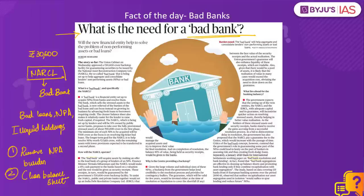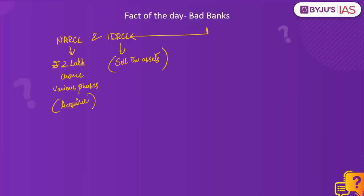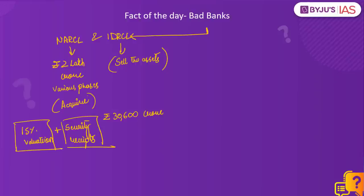In the present context, the National Asset Reconstruction Company Limited — NARCL — and India Debt Resolution Company Limited — IDRCL — will together act as a bad bank. NARCL has been incorporated under the Companies Act and set up to acquire stressed assets worth about Rs. 2 lakh crore from various commercial banks in phases. IDRCL will then try to sell these stressed assets in the market. To make this bad bank work, the government has approved Rs. 30,600 crore as a guarantee. NARCL would make a 15% cash payment to the banks based on a valuation of the bad loan, and the rest would be given as security receipts, guaranteed by the government's Rs. 30,600 crore backstop facility.